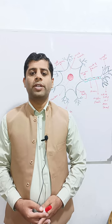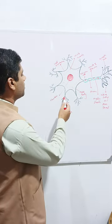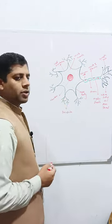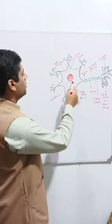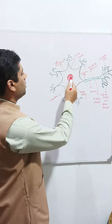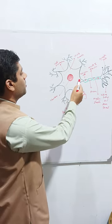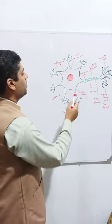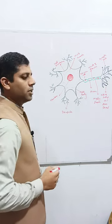The axon, cell body, and dendrites. These branch structures arising from the cell body are called dendrites. This is the cell body containing nucleus, cytoplasm, and nissel granules, and this cell body is enclosed by the cell membrane.